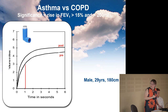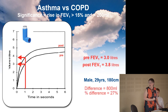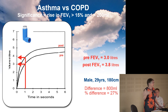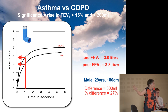Here's an example. A really young man has got a pre-bronchodilator FEV1 of 3 litres. It goes up after bronchodilation to 3.8 litres — that is 800 mls difference — a difference of 27%. Significant? Yes. Diagnosis? Probably asthma. Given an appropriate history, that would look like asthma. A bronchodilator response to a short-acting beta agonist is a useful indicator of asthma.